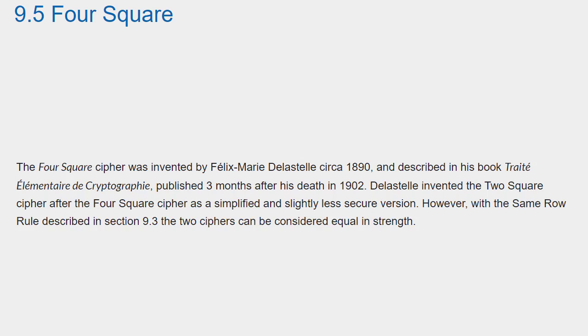Delastelle invented the Two Square cipher after the Four Square cipher as a simplified and slightly less secure version. However, with the same row rule described in section 9.3, the two ciphers can be considered equal in strength.